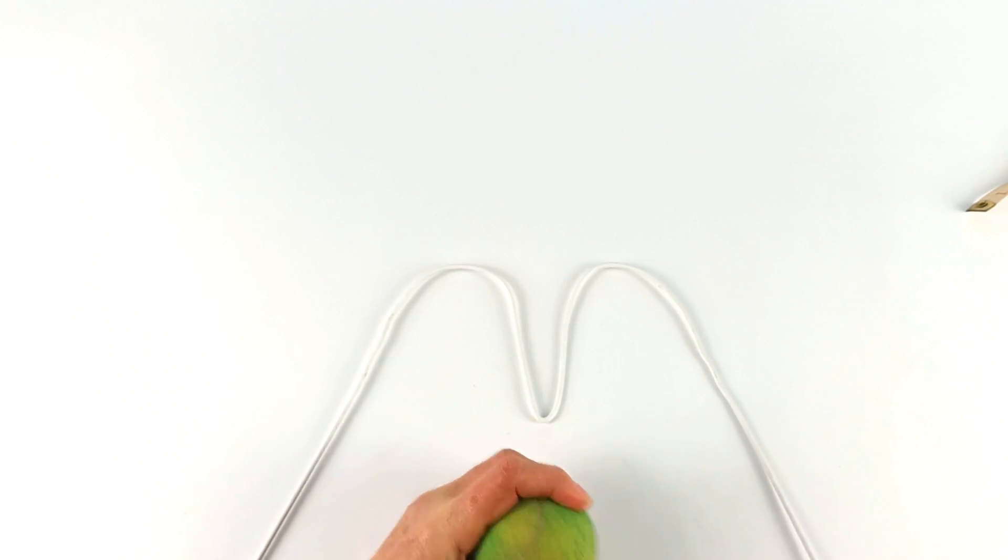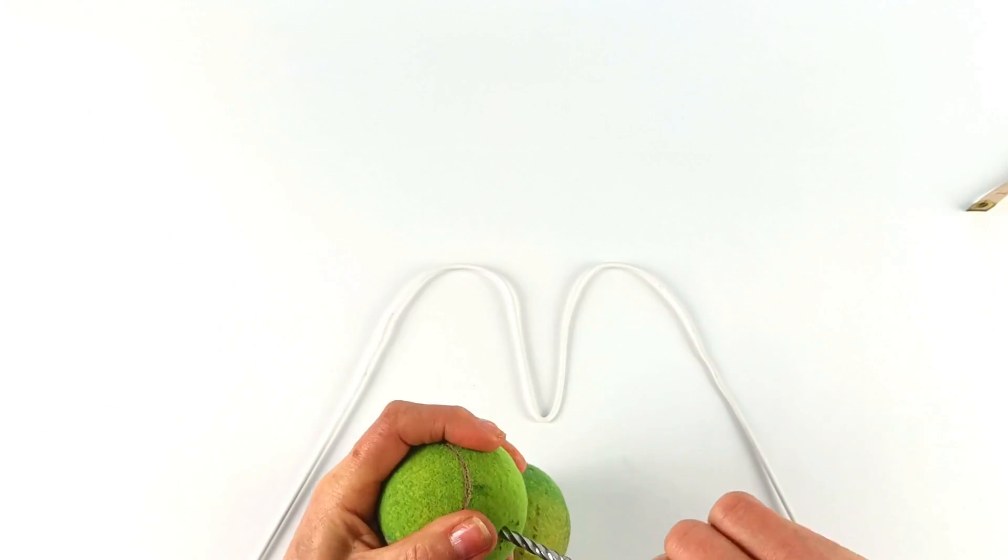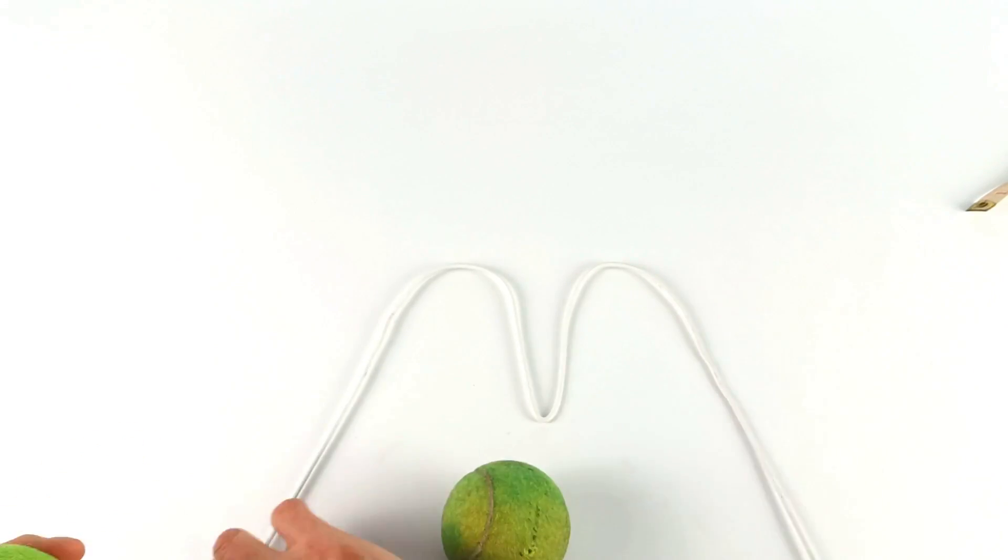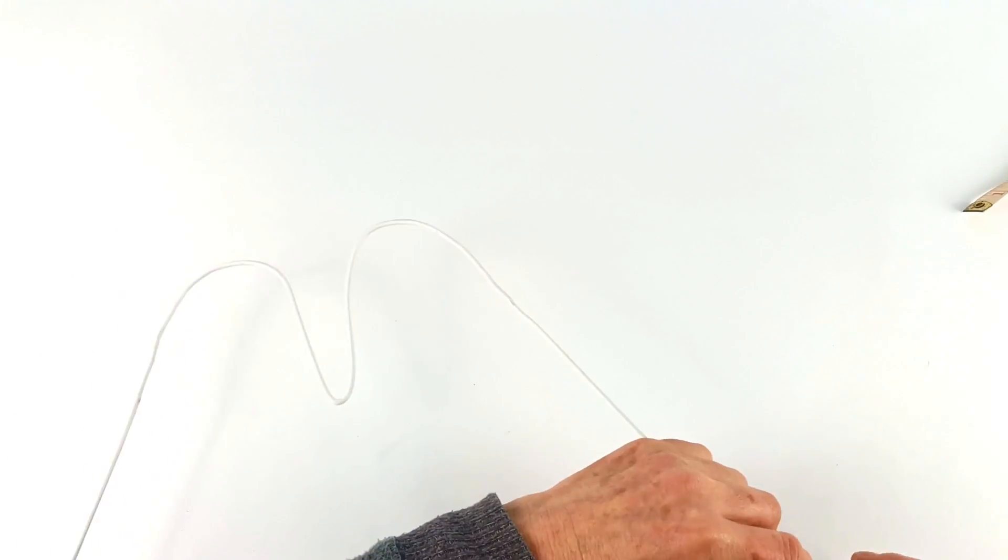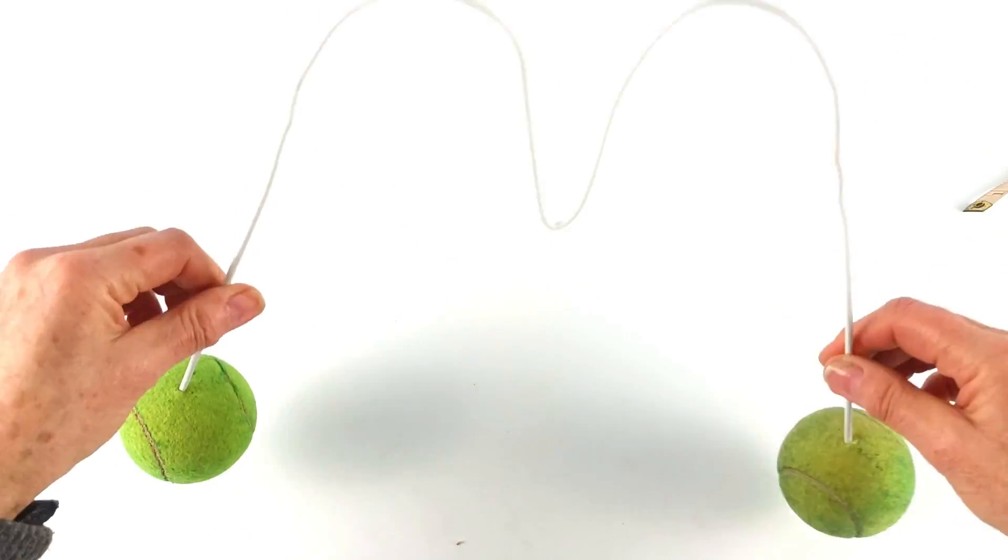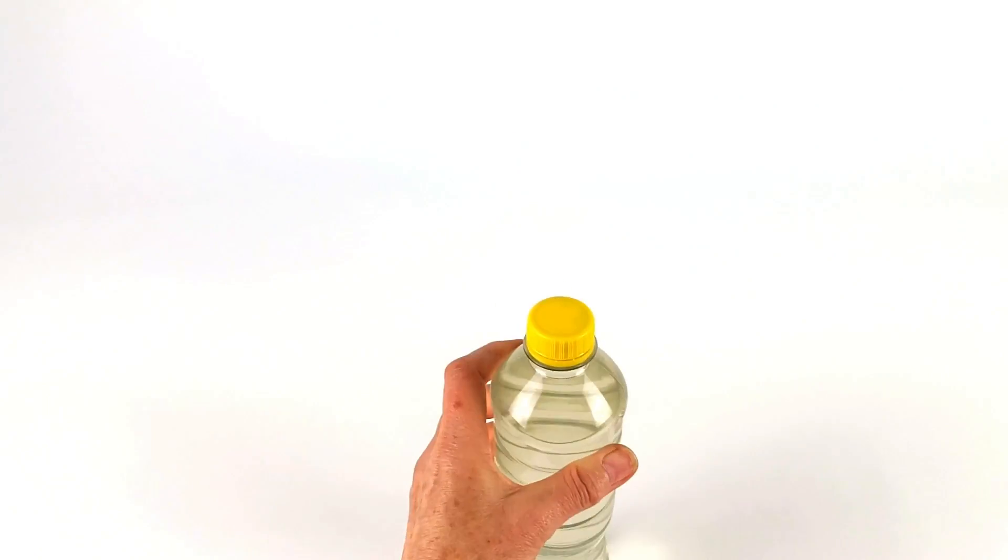Now we're going to use some tennis balls. You could actually replace this with other items like airplanes, birds, all sorts of cool things you could put on here. We're going to attach one on either side just like that, and our inertia hat is actually done.